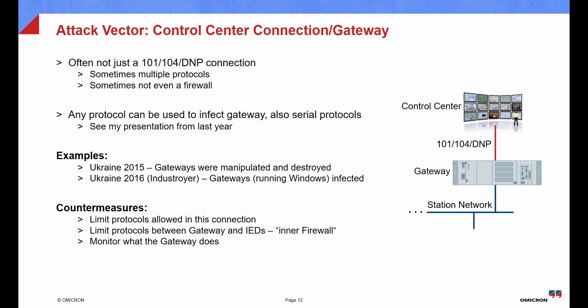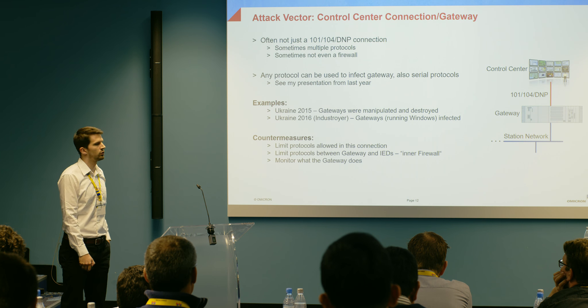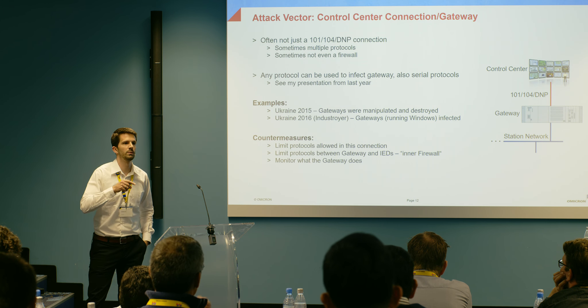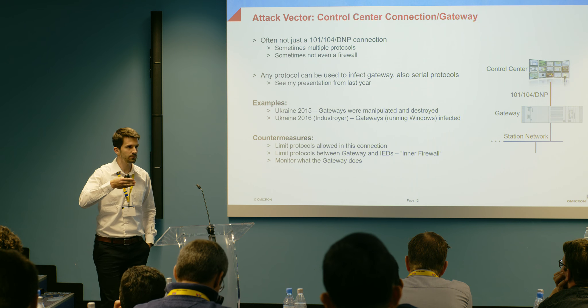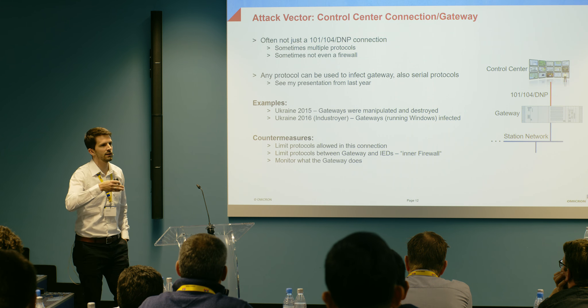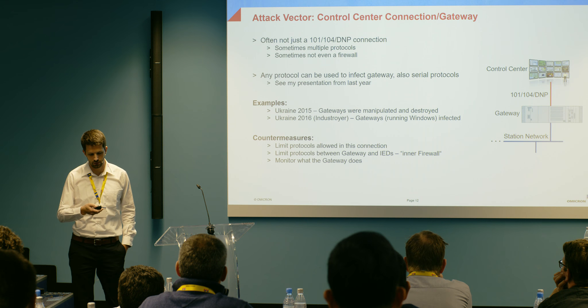Countermeasures: limit the protocols that can reach the gateway through this connection using a firewall, and apply the inner firewall principle between the gateway and IEDs. Another option is to monitor gateway behavior — the Industroyer malware caused the gateway to start scanning for CSWI logical nodes in relays using the MMS GetNameList command, looking for controllable objects to switch breakers. This behavior change could be detected on the network.